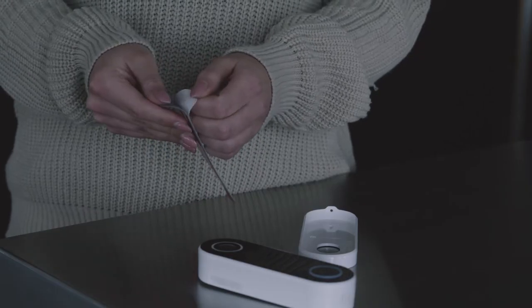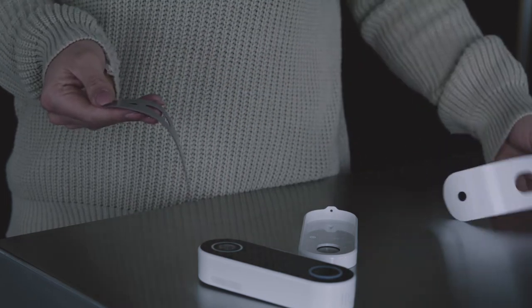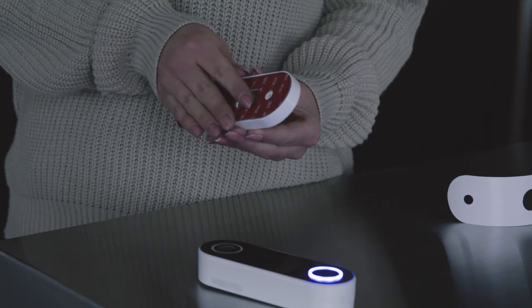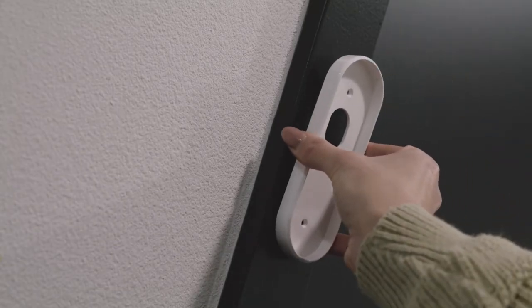Installing the Smart Doorbell 2 to the wall. Attach the double-sided 3M tape to the bracket. Remove the red-sided protective layer. Place the bracket carefully on the wall.